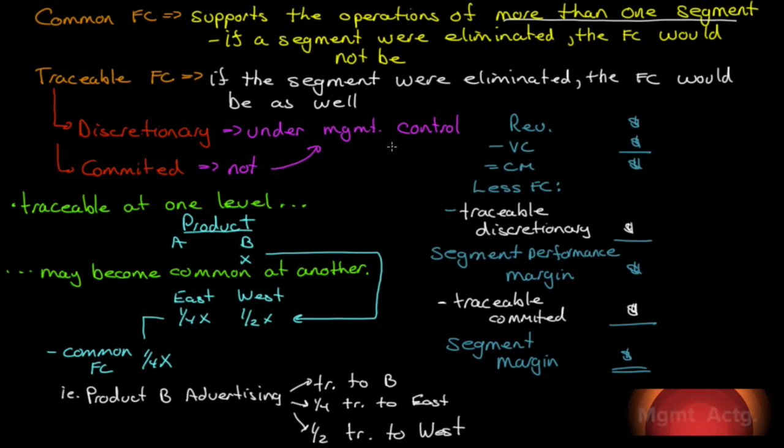So let's review some of that new terminology that we brought in. We have our common fixed costs and our traceable fixed costs. Let's start with the common first. These are fixed costs that support the operations of, and I underlined it here because it's important, more than one segment. If a segment were to be eliminated, that fixed cost would not be.